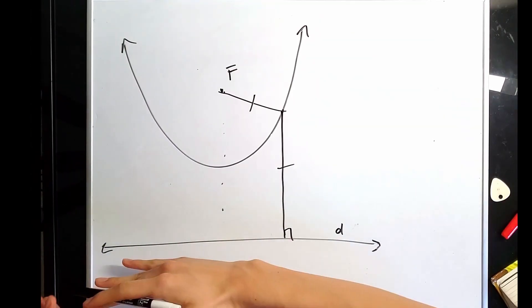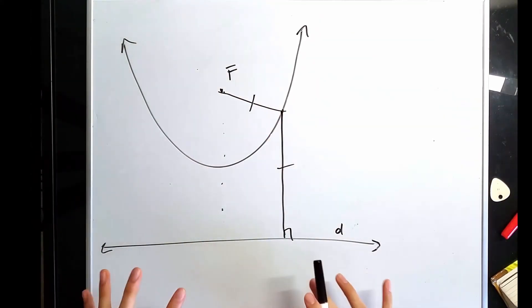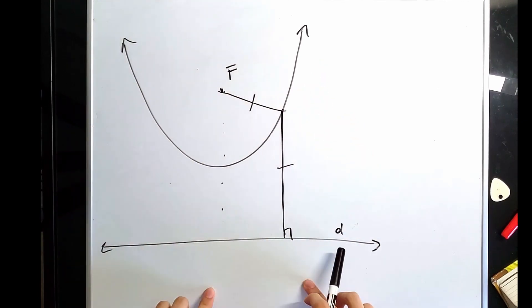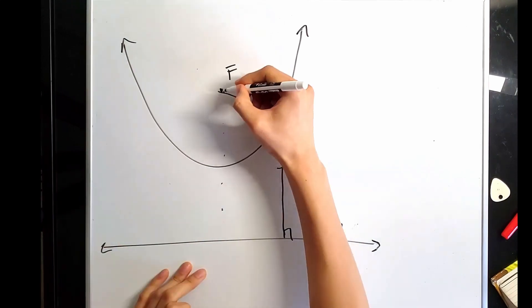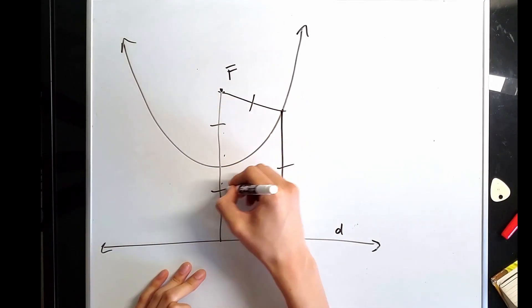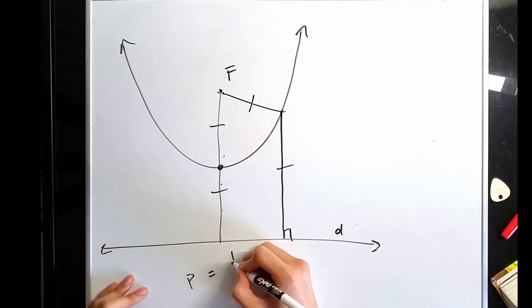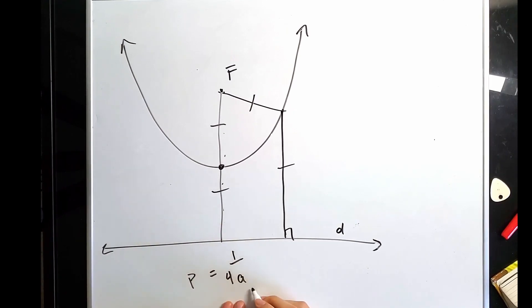Parabolas. There is a directrix, which is perpendicular to the line of symmetry, and the distance from any point to the directrix is equal to the distance to the focus. The focus is the point where it's somewhere in the parabola. You can find the focus and directrix. They are both equidistant from the vertex equal to 1 over 4a, for a as the leading coefficient.